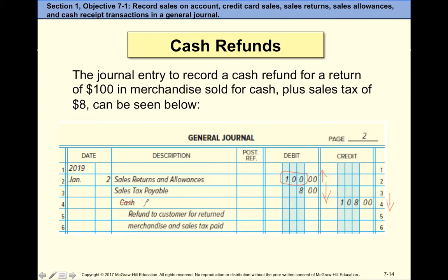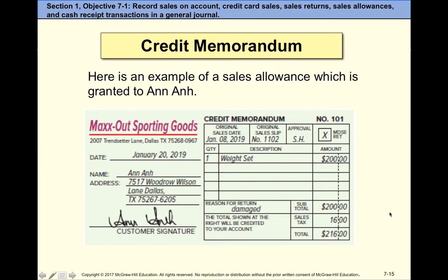If the original sale was on account, then instead of cash we would credit accounts receivable. That's why we call it a credit memo — or why stores call it store credit — because accounts receivable would be decreased. For example, on a credit memo, the amount returned plus sales tax is the total amount we are crediting to decrease what they owe us — $216 less.